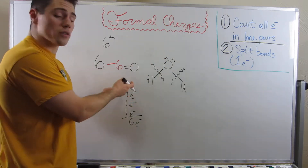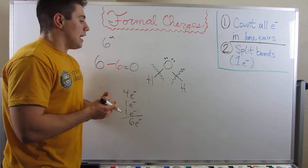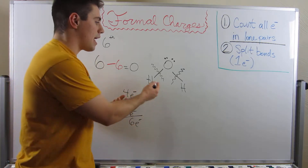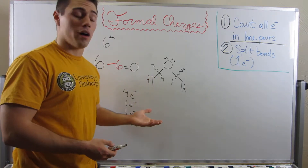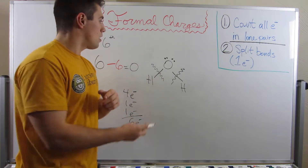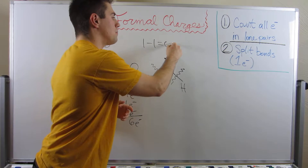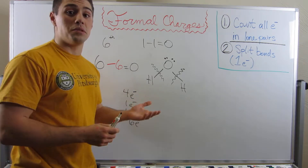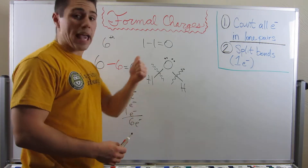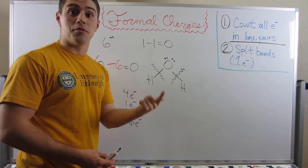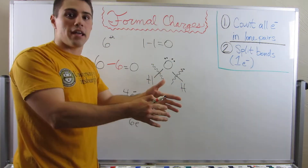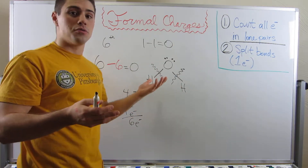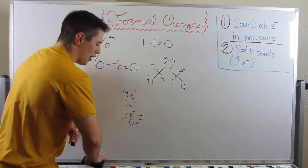Oxygen brings six to the table and is in control of six, so it has a net zero formal charge. For hydrogen: it brings one electron to the table, and since it's part of one bond, splitting that bond counts as one. One minus one equals zero — both hydrogens are also neutral. All you need to be a master at formal charges is: count lone pairs, split bonds in half, find where an atom is on the periodic table, determine its valence electrons, and subtract.